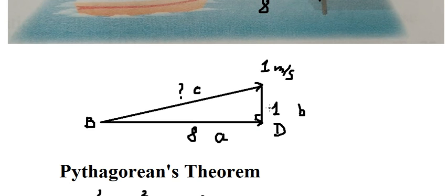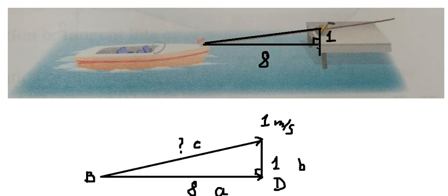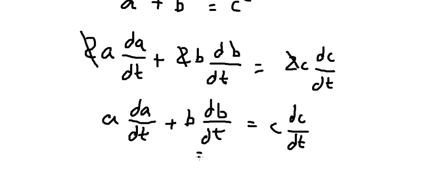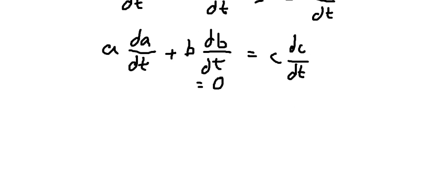We know that db/dt, we know that this one does not change because the distance from the dock to the boat, they keep about the same level. So that means db/dt equals to number 0. So we just have only this one and this one.